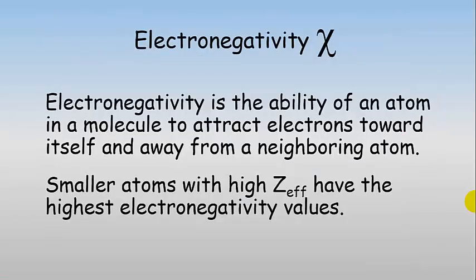Now electronegativity — this is going to be really important as we start to discuss whether a molecule is polar or not later in the course. Electronegativity is the ability of an atom in a molecule to attract electrons toward itself and away from a neighboring atom — basically how greedy it is with electrons. Smaller atoms with high Z-effective values have the highest electronegativity values.